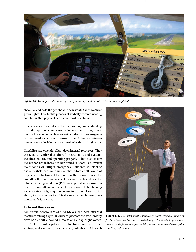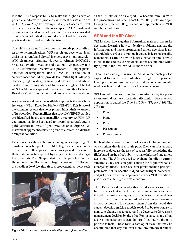External Resources — air traffic controllers and AFSS are the best external resources during flight. In order to promote the safe, orderly flow of air traffic around airports and along flight routes, ATC provides pilots with traffic advisories, radar vectors, and assistance in emergency situations. Although it is the PIC's responsibility to make the flight as safe as possible, a pilot with a problem can request assistance from ATC. For example, if a pilot needs to level off, be given a vector, or decrease speed, ATC assists and becomes integrated as part of the crew.